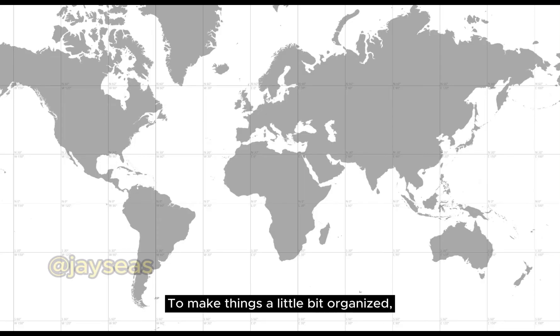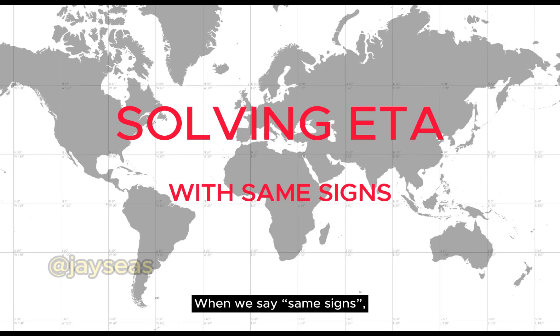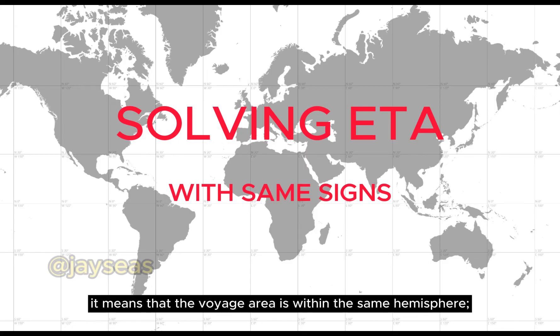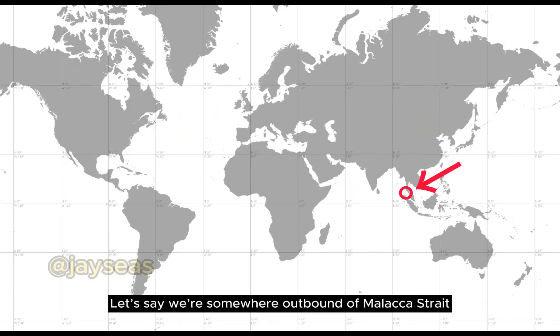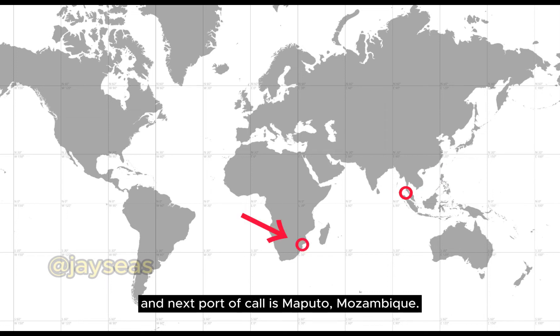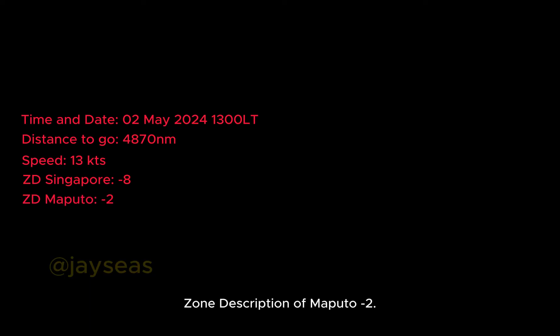To keep things organized, we'll separate our formulas depending on the ZD areas. First, we'll solve ETA involving same signs — meaning the voyage area is within the same hemisphere, be it west or east. Let's say we're outbound of Malacca Strait and the next port of call is Maputo, Mozambique. Present time and date: 2nd of May 2024, 1300 local time. Distance to go: 4,870 nautical miles. Present speed: 13 knots. Zone description of Singapore: minus 8. Zone description of Maputo: minus 2.